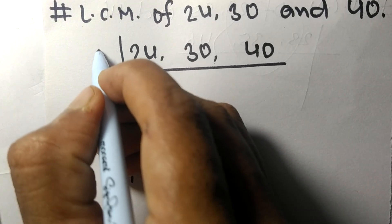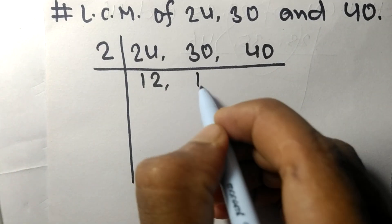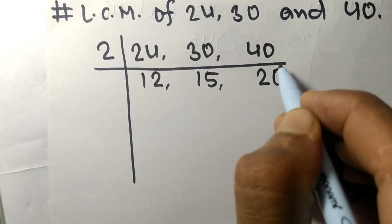These numbers are divisible by 2. 2 times 12 means 24, 2 times 15 means 30, 2 times 20 means 40.